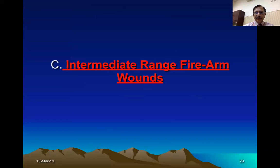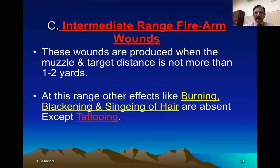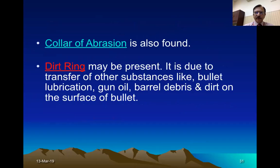Then intermediate range firearm wounds: these wounds are produced when the muzzle is at one to two yards from the victim. At this range, other effects like burning, blackening, and singeing of hair will be absent, because the flame cannot reach beyond one to two yards. But tattooing will be present because the coarse heavy particles — burnt or unburnt — can travel up to a few yards and show the tattoo effect. Collar of abrasion will be present, formed by rubbing and indenting of the bullet. Dirt ring can be there because the oil can travel for a longer distance.